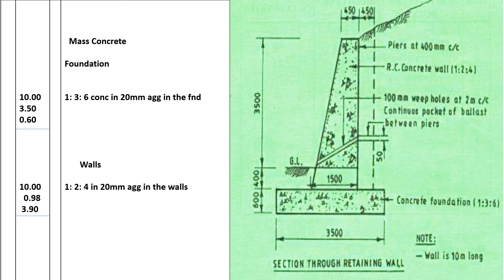So this is our retaining wall. We have been given the measurements we need for the concrete. The width is 500, the depth is 600, and we've been told the wall is 10 meters long. So our wall going this way is 10 meters long.